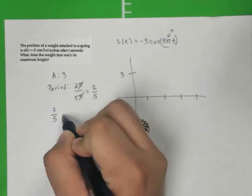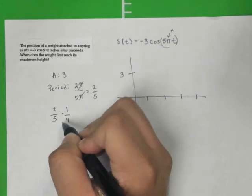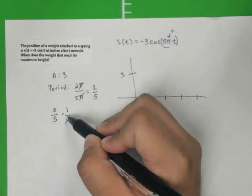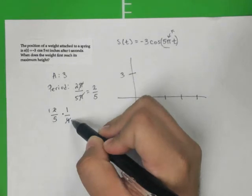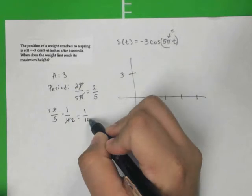2 fifths multiplied by 1 fourth, because this is the same as dividing by 4. So when we do this, we are going to get this reduced, 1 over 2. So each tick mark will actually be 1 tenth of a unit.